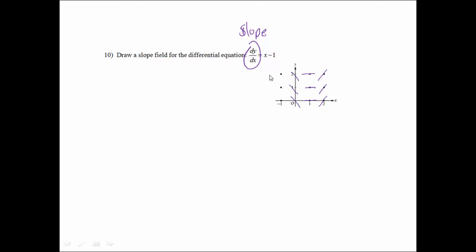And then when x equals negative 1, negative 1 minus 1 is negative 2. So my slopes will be negative 2 and they just need to be steeper than the lines I already drew. And that's all we need to do.